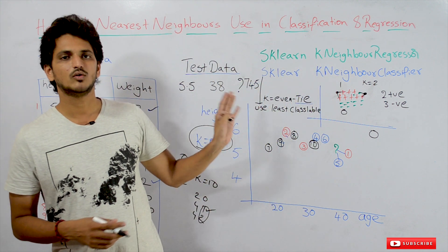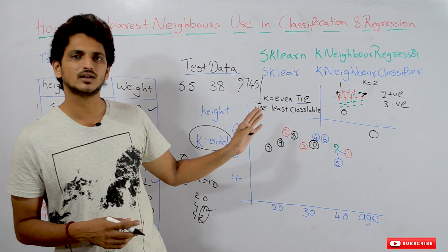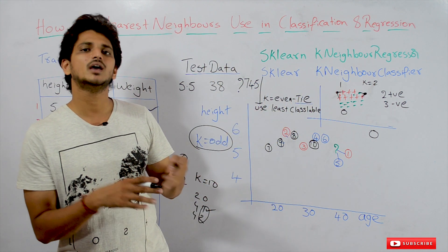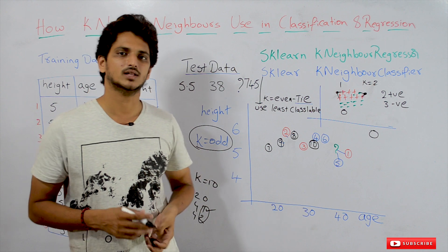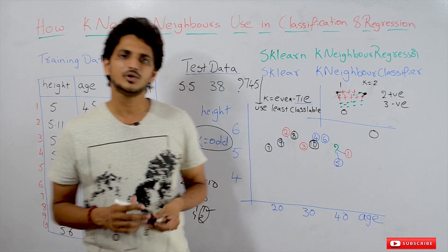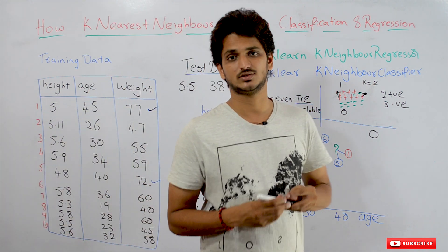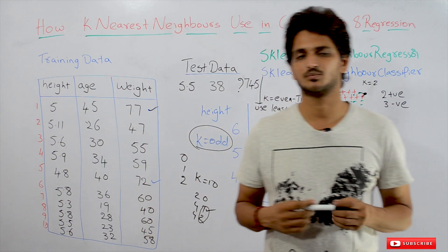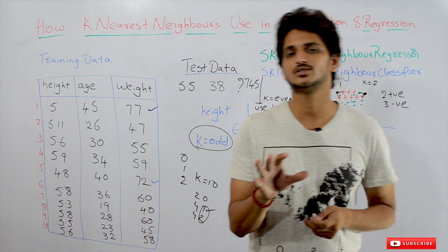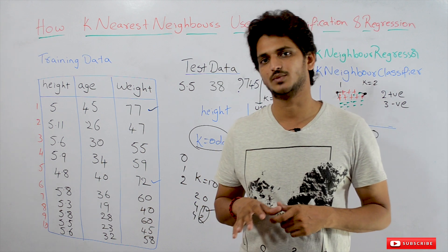This is how KNN works on classification and regression models. Hope you understand the concept. If you have any questions, please post them in the comment section below.